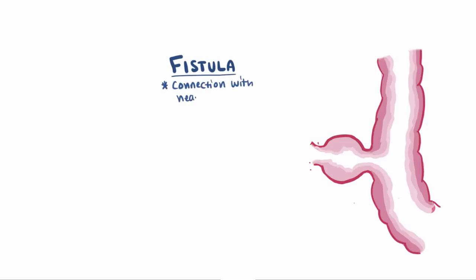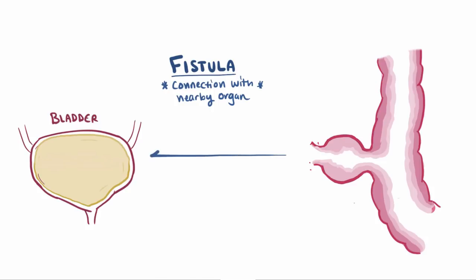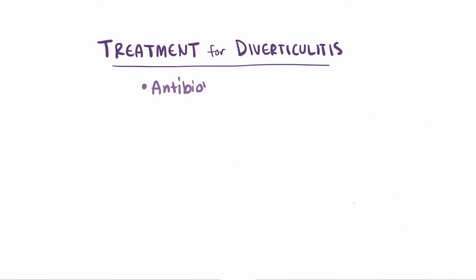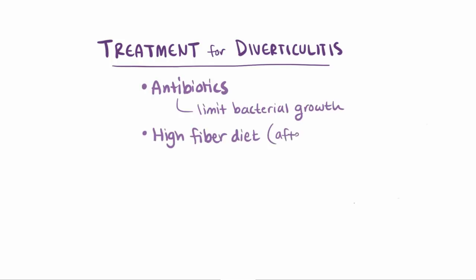Sometimes if the diverticula become distended enough, it might rupture and form a fistula, which is a connection with an adjacent organ or structure. Since it sits pretty close to the bladder, a fistula connecting the large intestine to the bladder might form, called a colovesicular fistula, and this might result in air or stool in the urine, which is not a good thing. Treatment for diverticulitis might involve antibiotics to limit bacterial overgrowth, and some might recommend a high fiber diet after patients have recovered. In more severe cases, the affected area of the colon might be surgically removed.